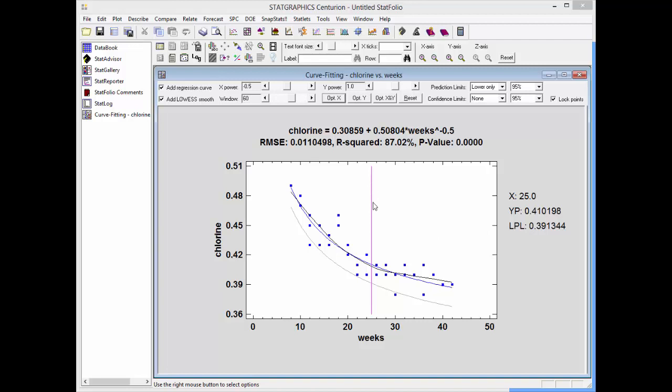This will bring up a vertical crosshair. And in the margin of the plot you'll see that at 25 weeks the predicted value of chlorine is 0.41. The lower prediction limit is 0.39. I'm now going to drag my crosshair to the left a little bit until that lower prediction limit reaches approximately 0.4. That occurs at 21 and a half weeks, which would be a reasonable shelf life to set for this product.